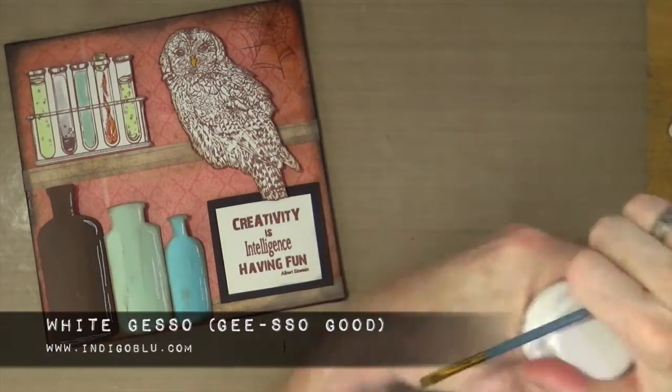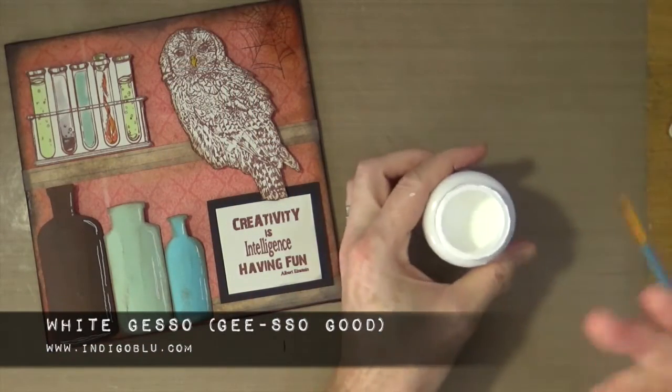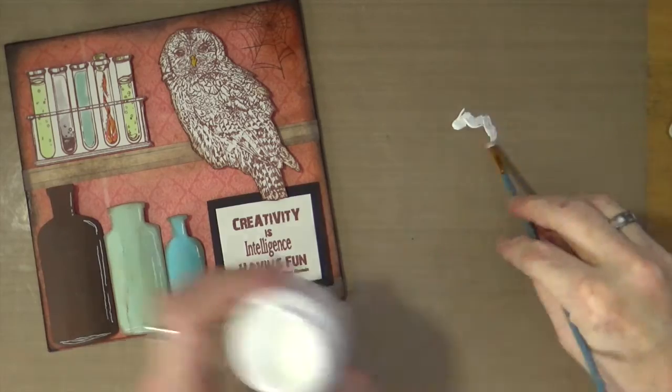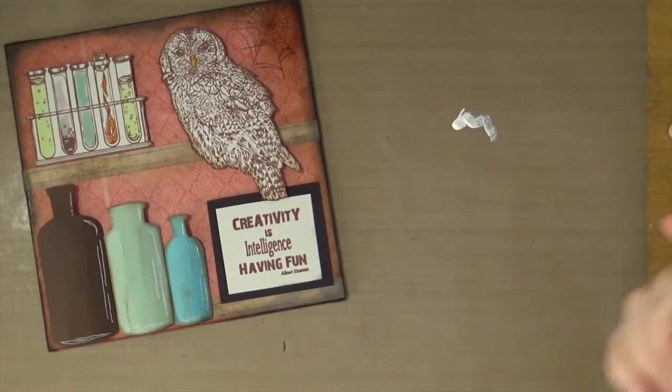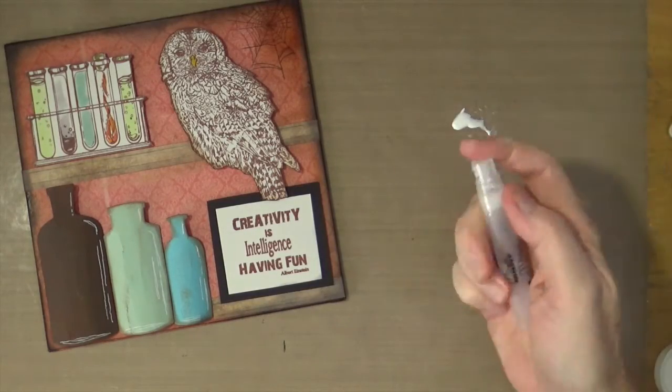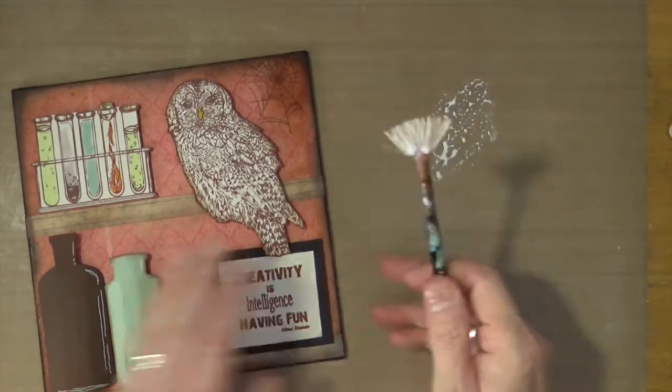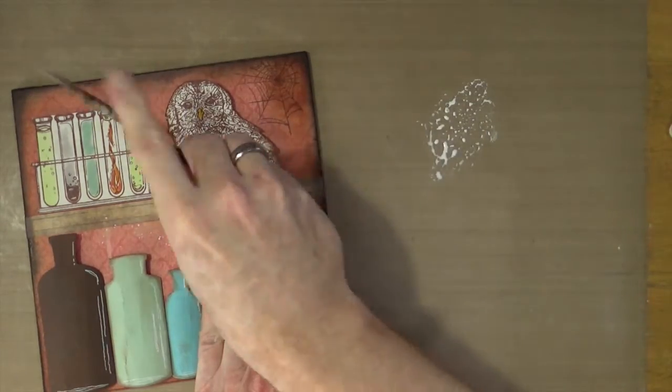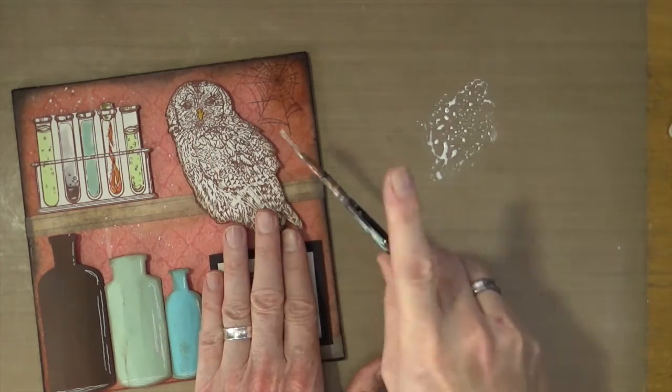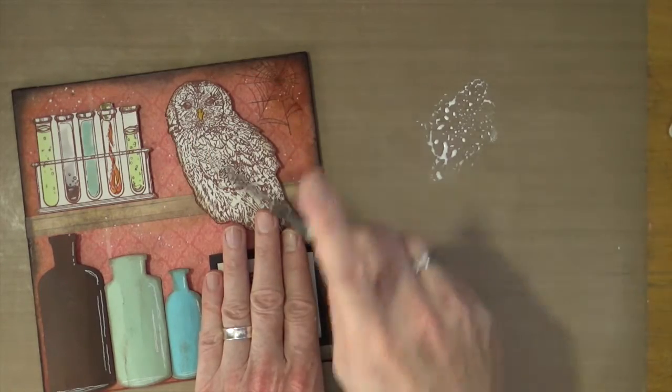As a finishing touch, I'm grabbing white gesso—this is the white gesso from Indigo Blue—and water with my mini mister. I'm mixing that up on the craft mat with my fan brush, then adding white speckles or splatters to make it look like dust motes in the air.